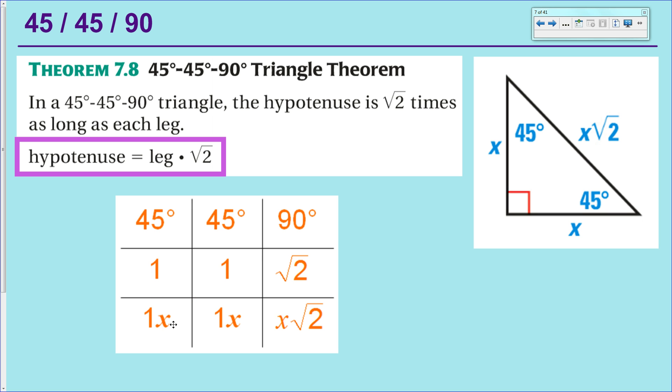But we can expand on that in the general case. So think of x as like a scale factor. If I made my triangle 3 times as big, well, the leg would be 1 times 3, which would be 3. The other leg would also be 3. And the hypotenuse would be 3 times the square root of 3. So that's the way to read this table. All of the information on this screen is extremely important. Copy it down.